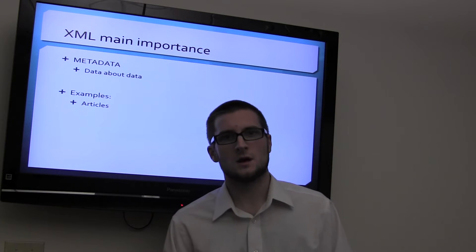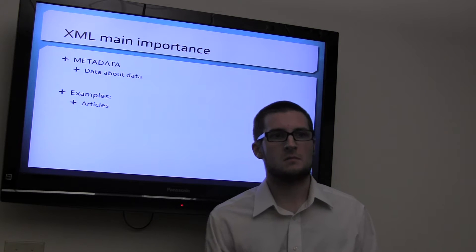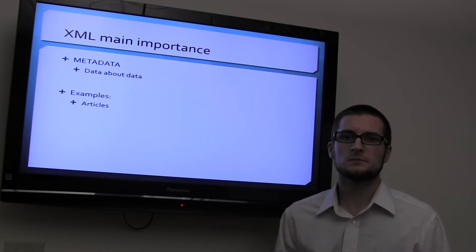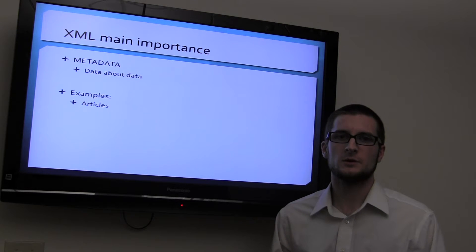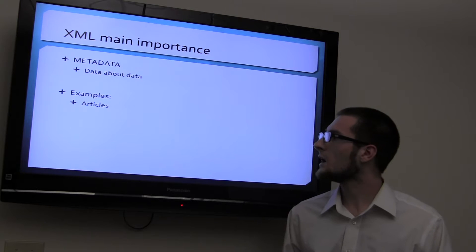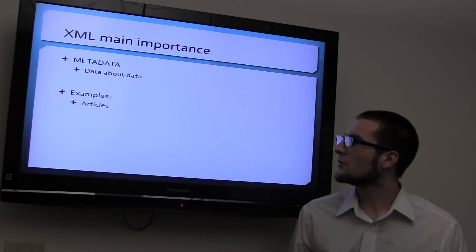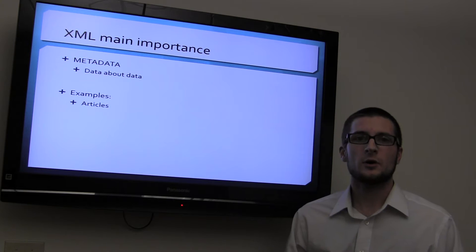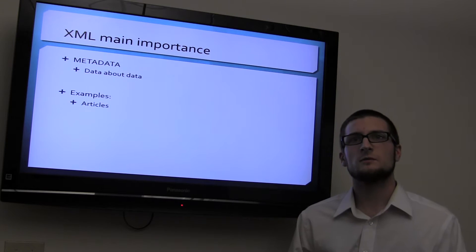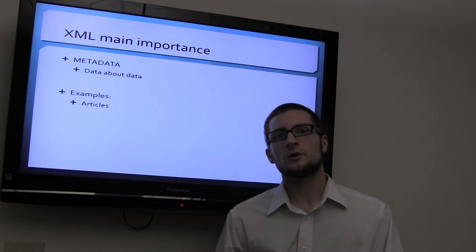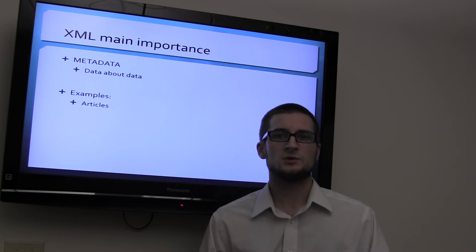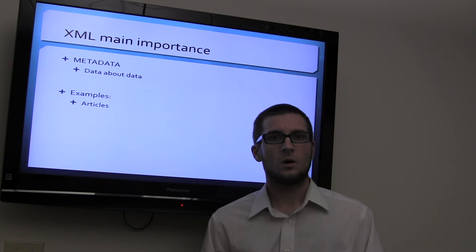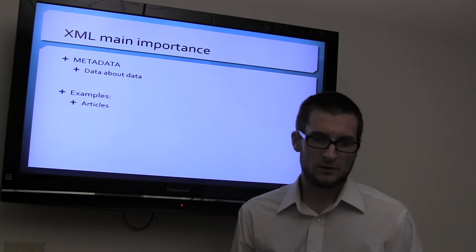Examples of data is an article. I'm a GA for Scholar's Archive at the Dewey Library, and I work with this a lot. Examples of metadata would be like an article. When you have an article, you have a title, you have a journal, you have an author, you have the description, the abstract, the citation, all that stuff that is the metadata of the article, or for anything else.